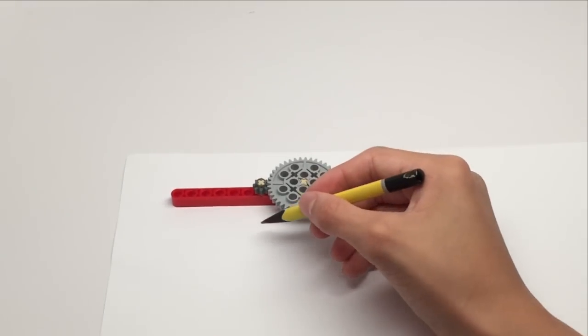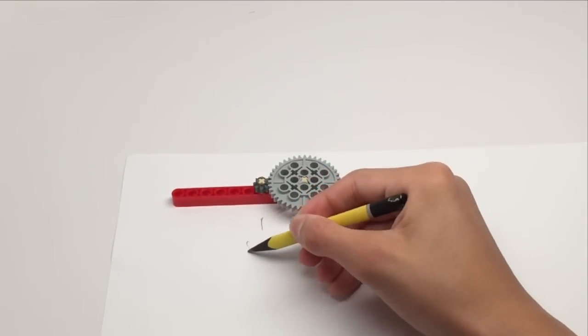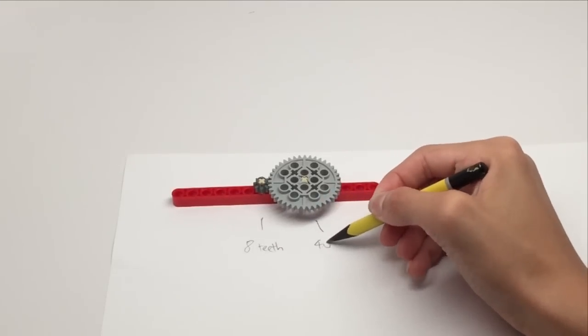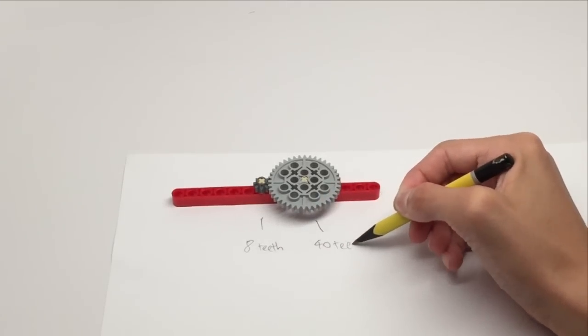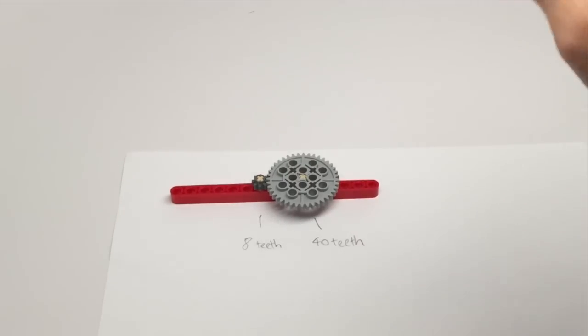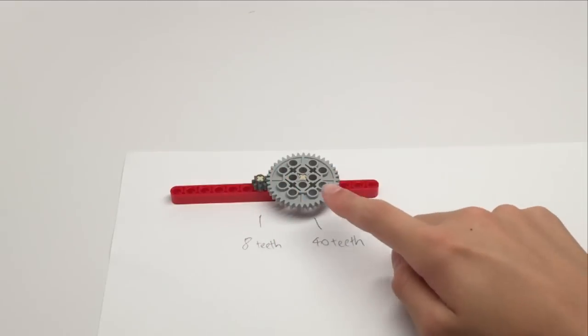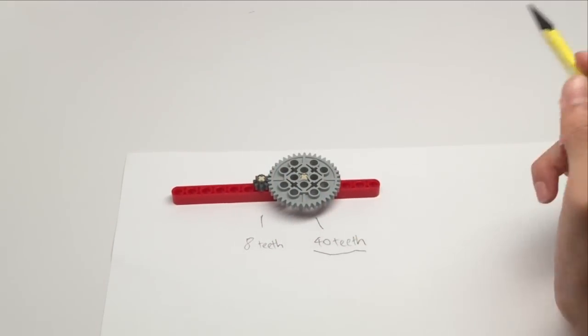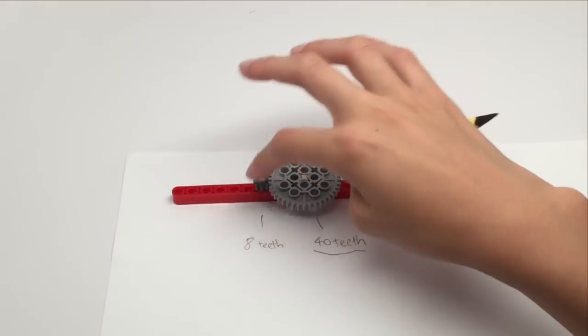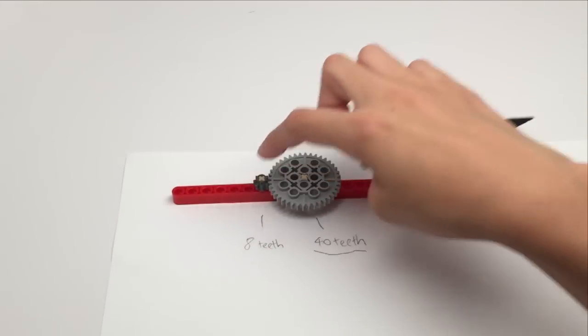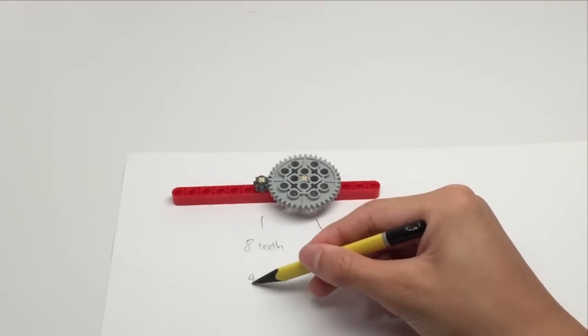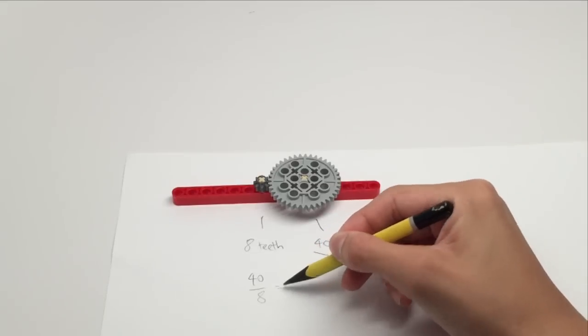So this gear has 8 teeth, whereas this gear has 40 teeth. This means that if you spin this big gear once, you can assume that the length of 40 teeth have been passed. So that means it will take 5 rotations of the smaller gear to travel the length of 40 teeth.